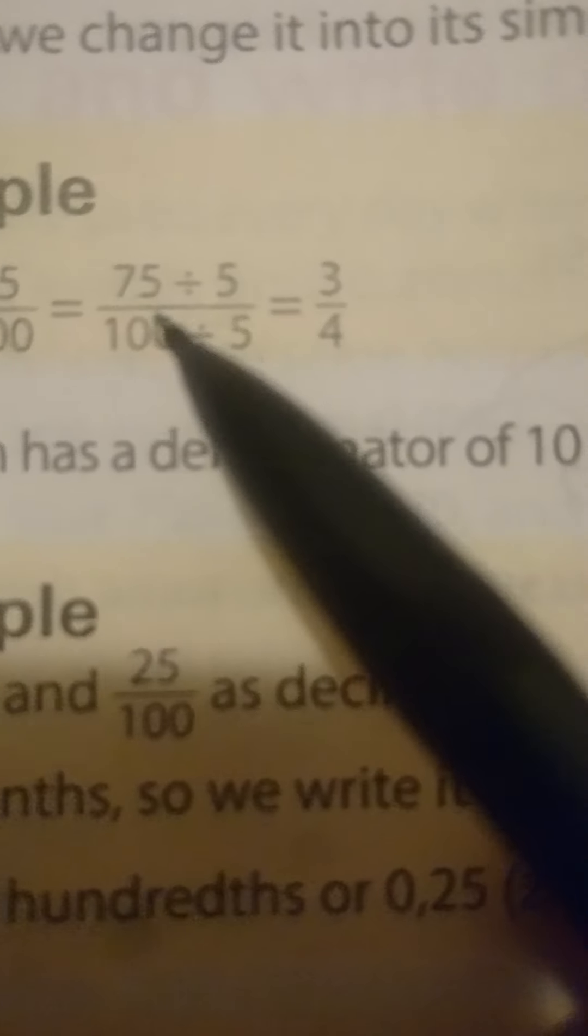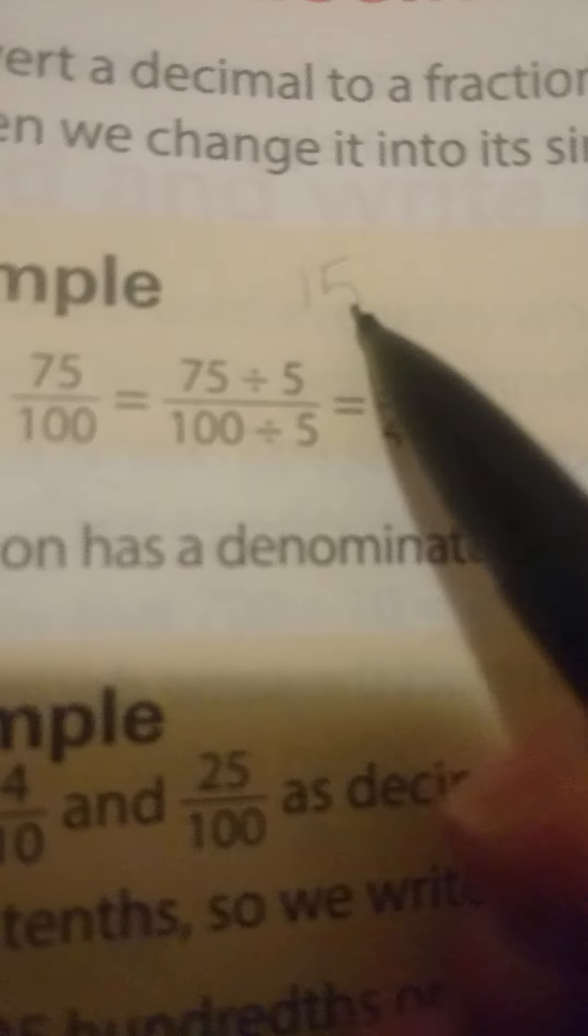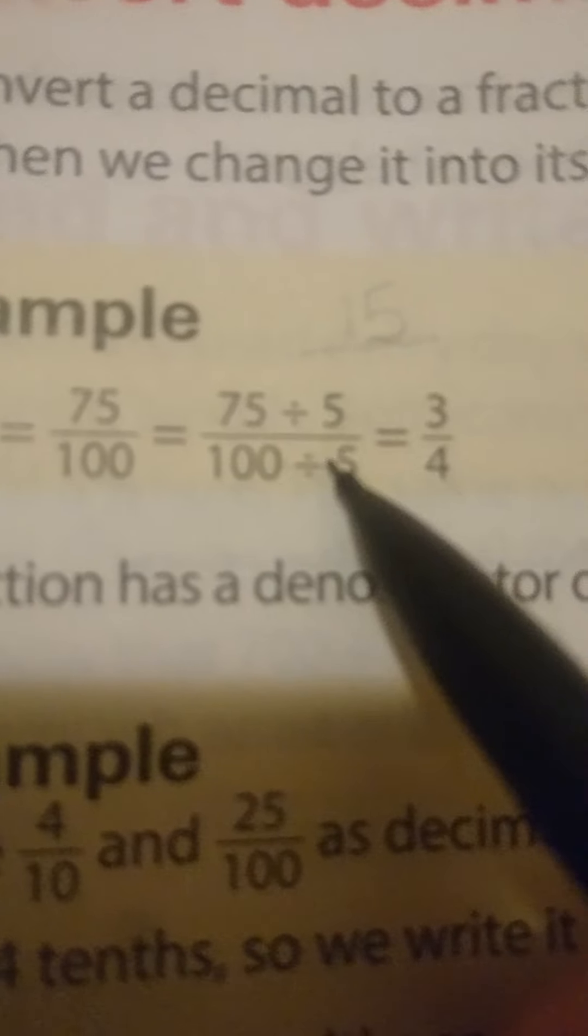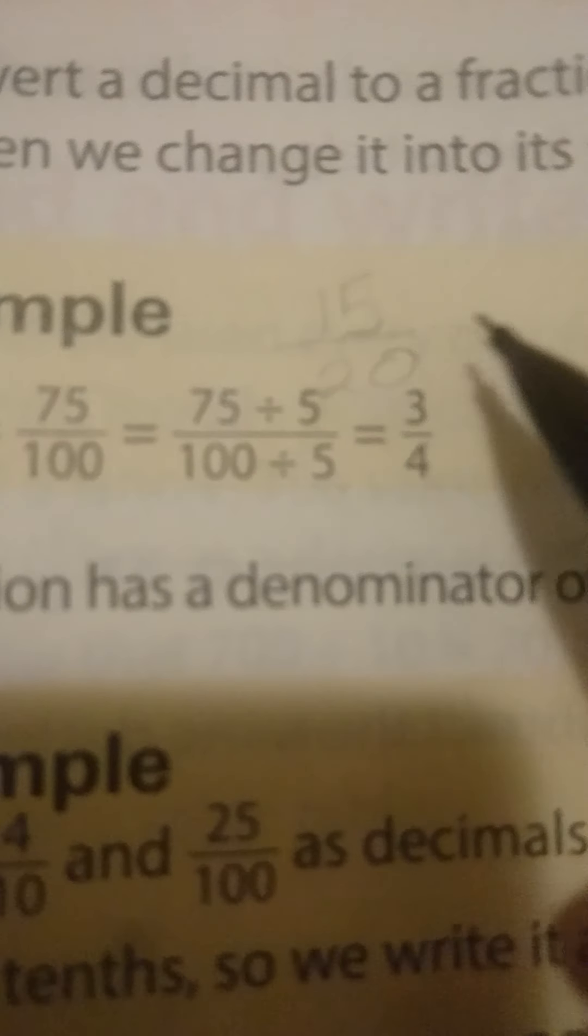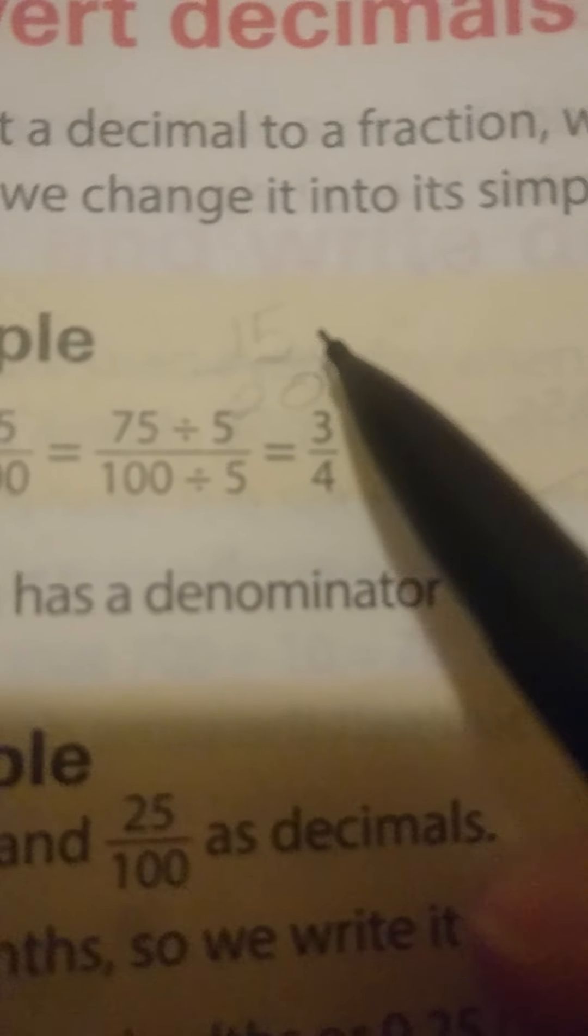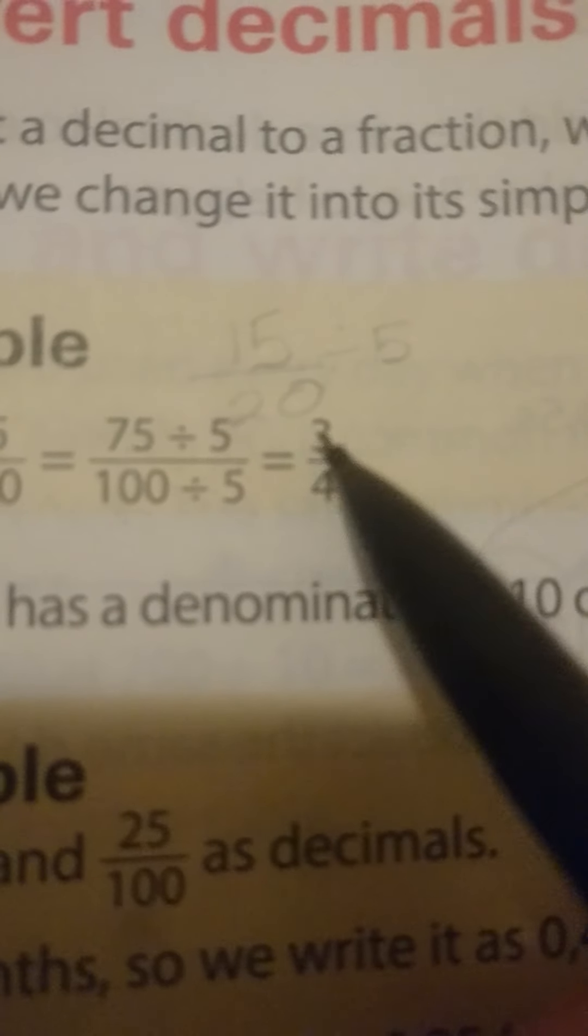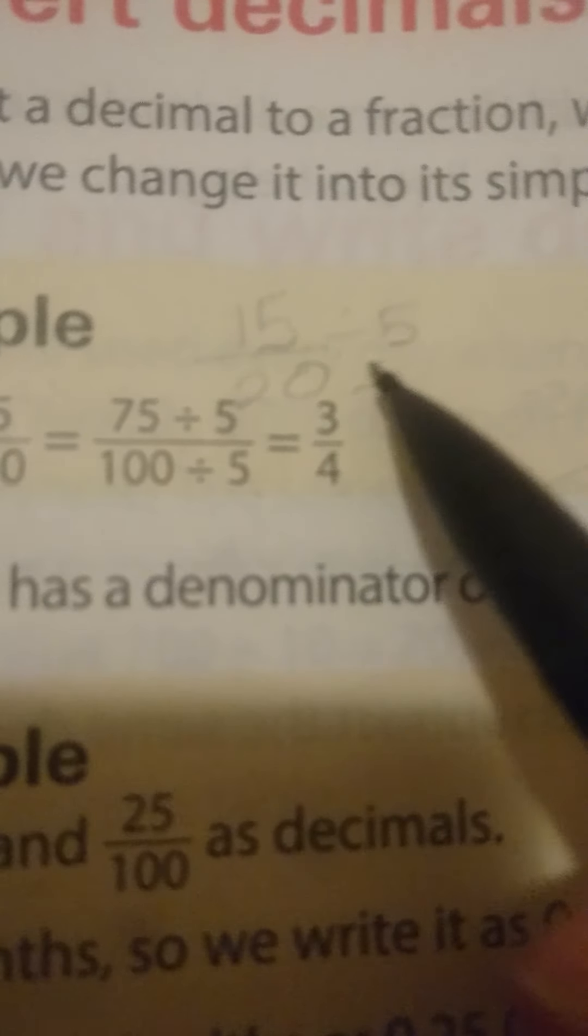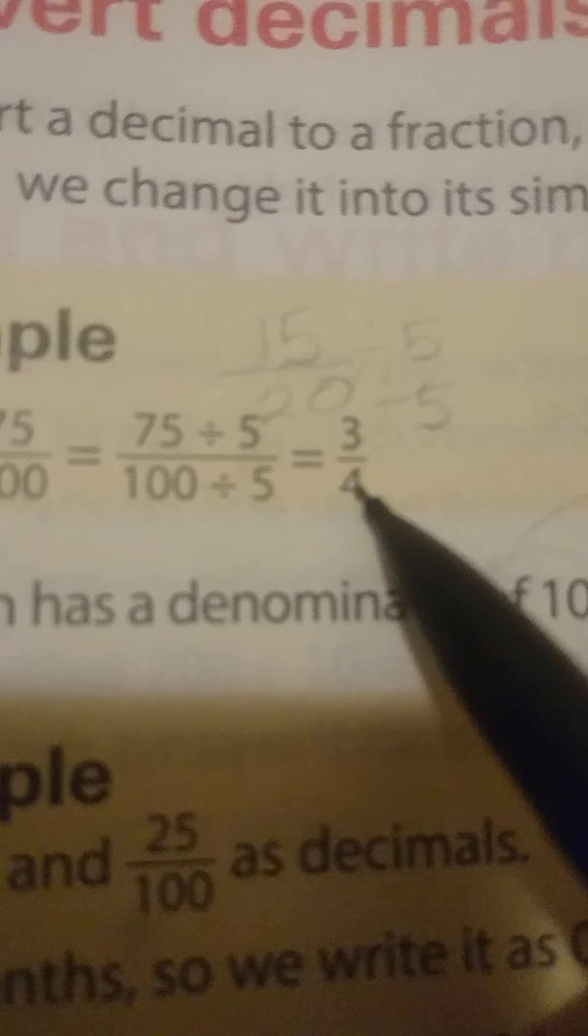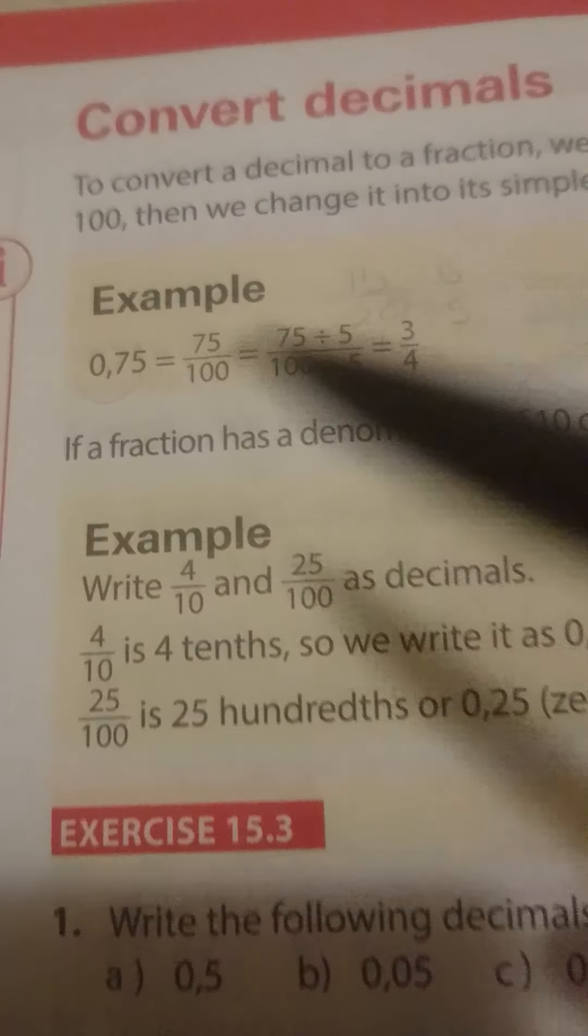Now, we can further simplify that. There is a mistake here. 75 divided by 5 is actually 15, and 100 divided by 5 is actually 20. Now, we can further divide this. We can say 15 divided by 5, and we are going to get 3. We can further say 20 divided by 5, and we will get 4. We cannot simplify it any further, so 0.75 also means 3 over 4.